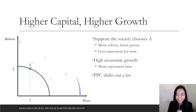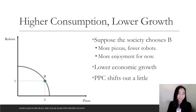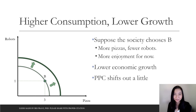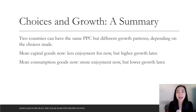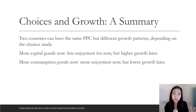If you choose point A, your economic growth will be big. If you choose point B — more consumption goods and less capital goods — you will have a smaller growth. To summarize: if you have two countries with exactly the same production possibility curve, depending on their choice, they could have a different growth rate in the future. If you choose more capital goods and less consumption goods, you'll have less enjoyment for now but higher economic growth in the future. If you choose more consumption goods now, you enjoy more now but will have a lower economic growth in the future.